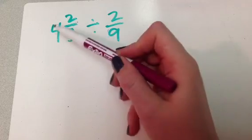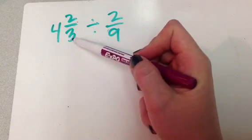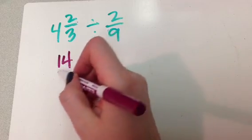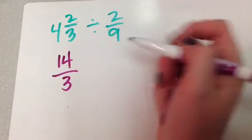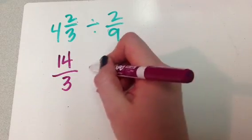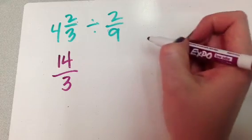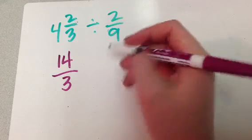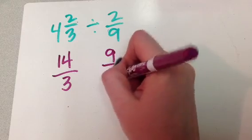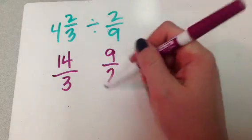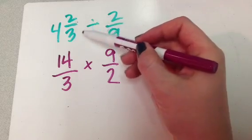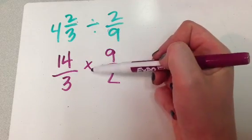Okay, so let's do that. 4 times 3 is 12, plus 2 is 14. My bottom number is going to stay the same. Okay, so now this guy, he's my second term, right, my second fraction, so I'm going to flip him upside down. And then once I flip him, then I'm going to multiply. I'm going to change my sign, my operation sign from division to multiplication.